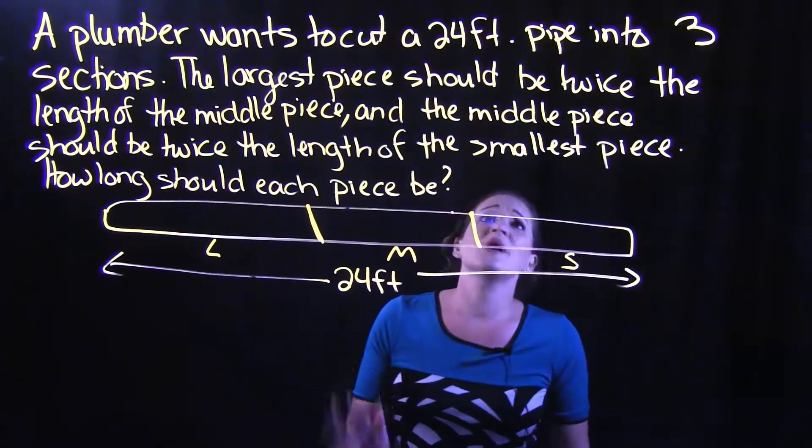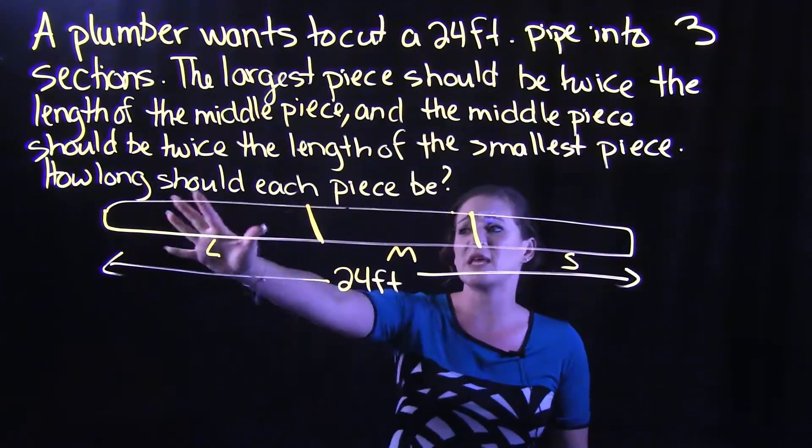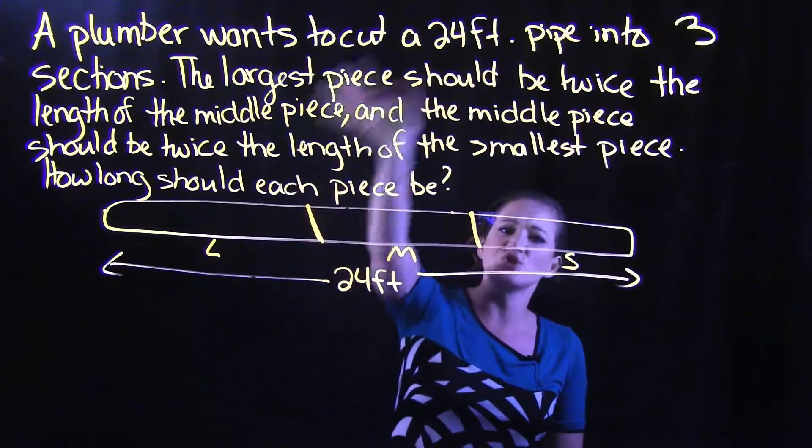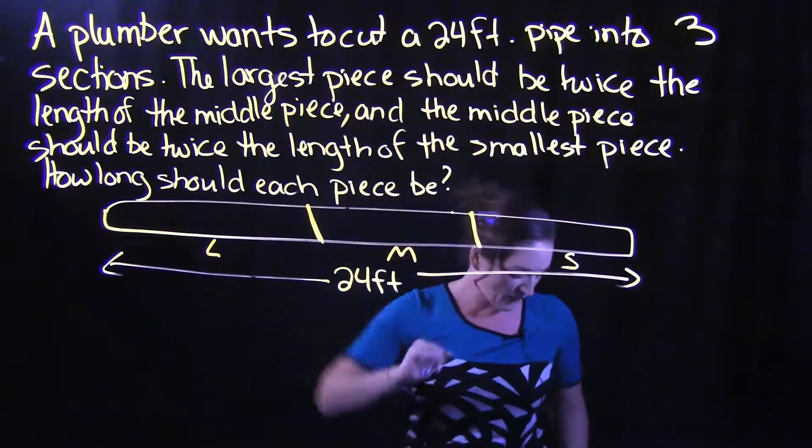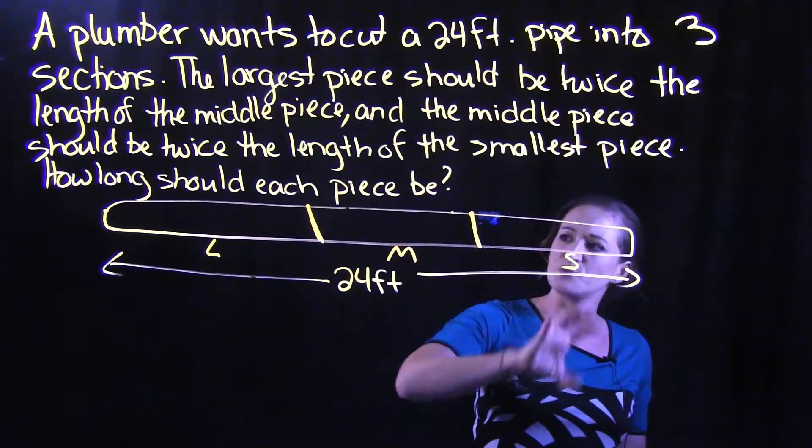So what they tell us about the pieces is this. It says the largest piece should be twice the middle, and the middle piece should be twice the small. Now it doesn't say anything about what the small piece should be.